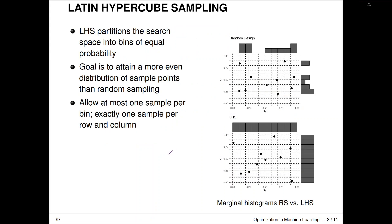How does Latin hypercube sampling work? There are two parts. The first is the true Latin hypercube part: it partitions the search space into bins of equal probability or equal size. We've created these bins in a two-dimensional input space. The idea is to distribute the points such that in each row and in each column you are covering only one of these bins. This is the LHS example, and that over there is the random design example where you just place points randomly.